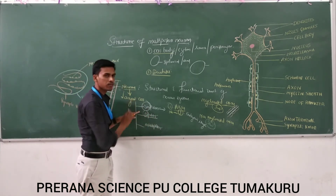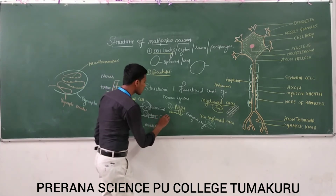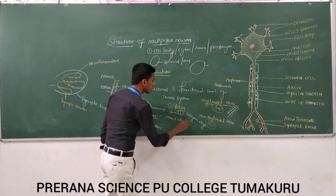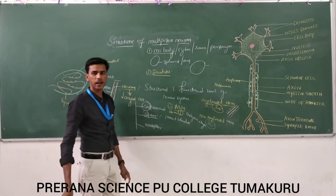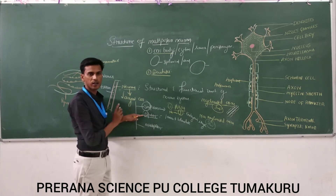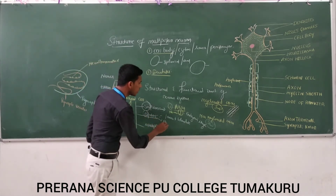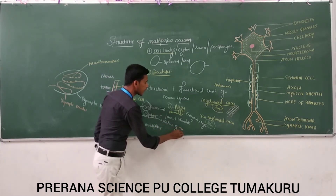Next, bipolar neuron. Here the neuron has one axon and one dendrite — that is called a bipolar neuron. So this bipolar neuron is found in the retina of the eye.